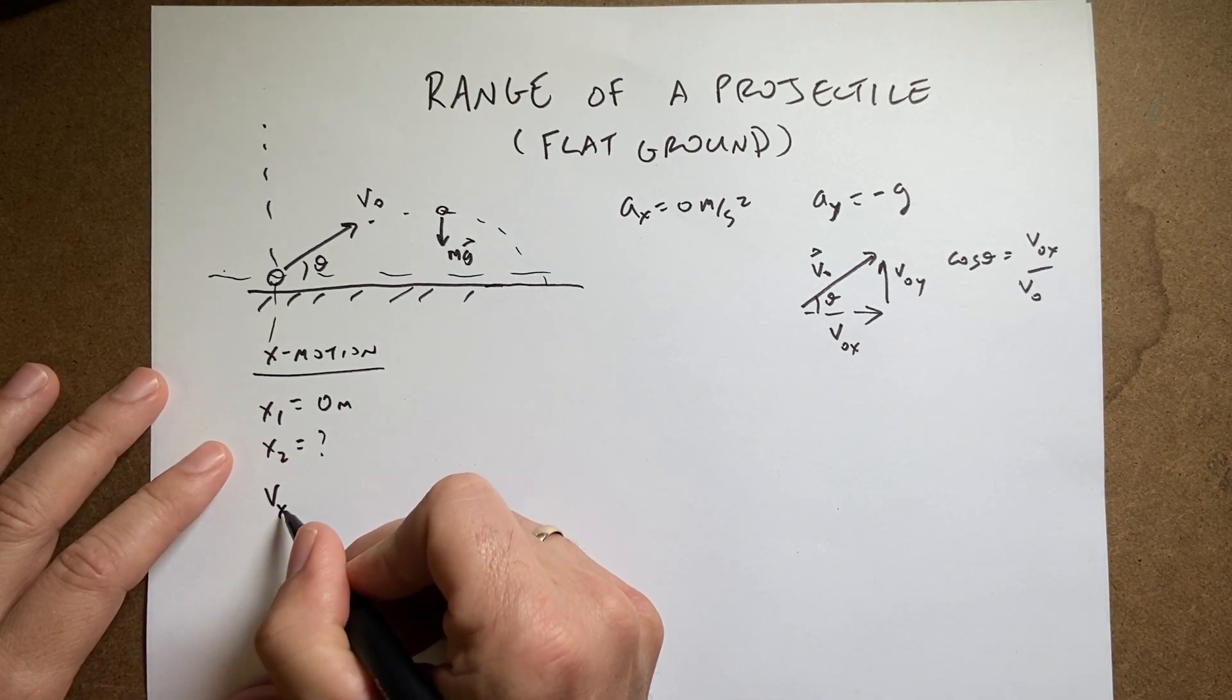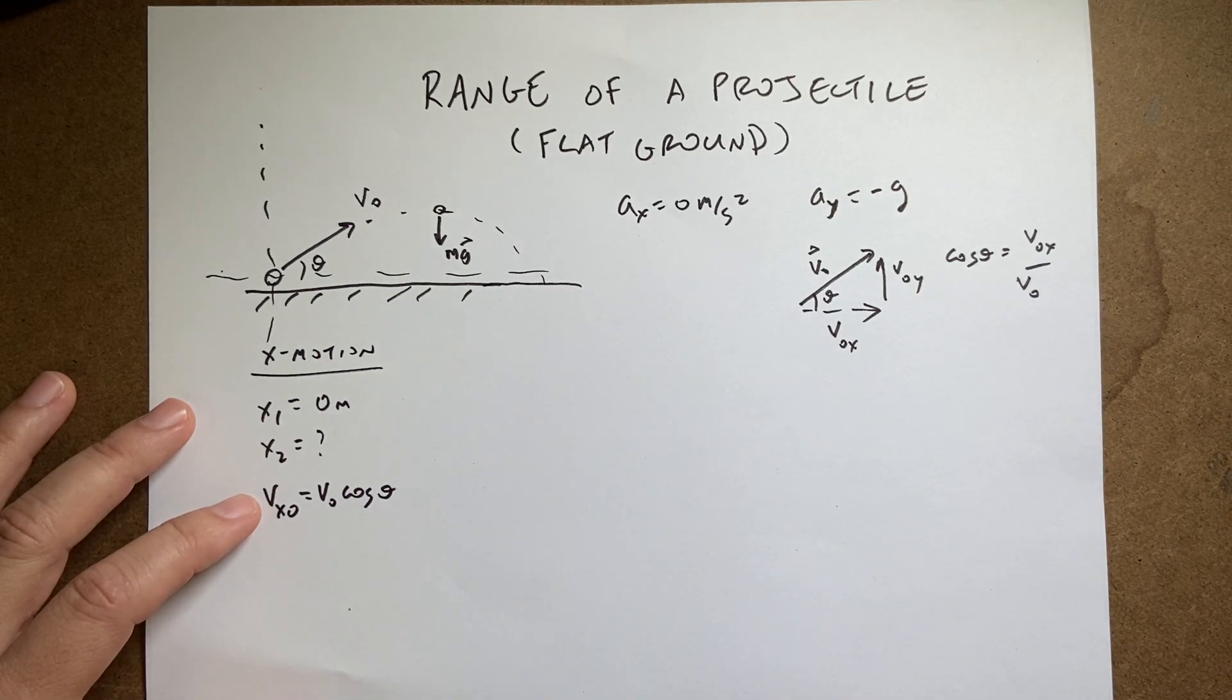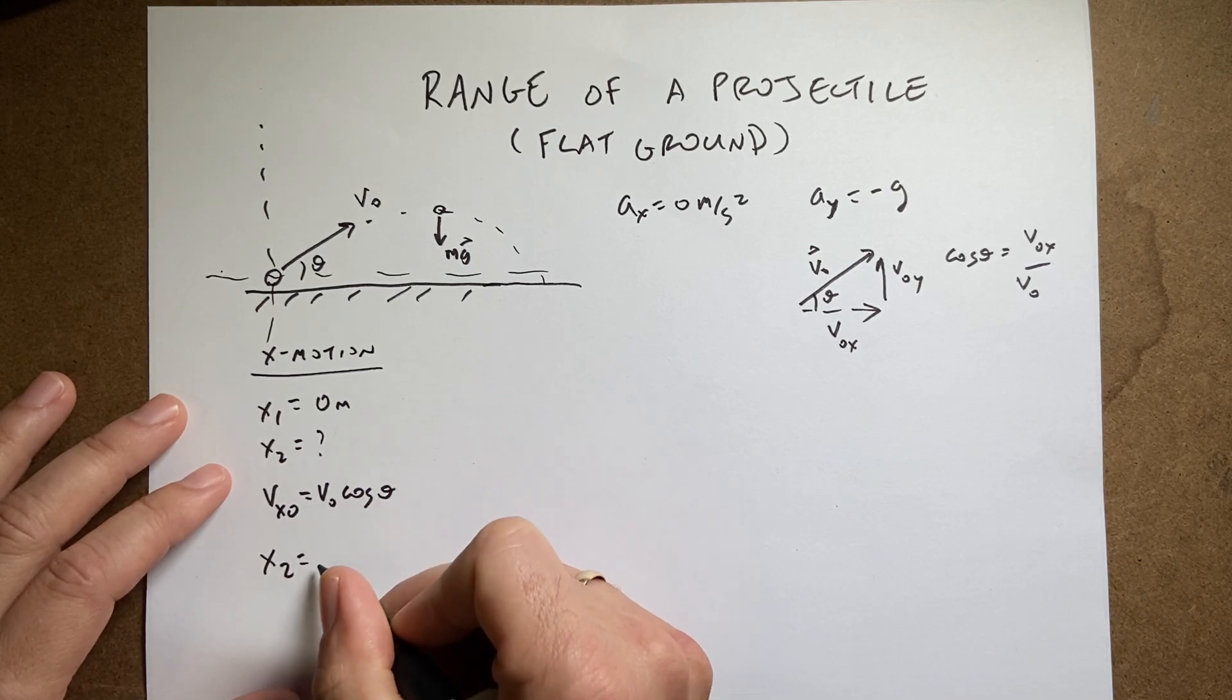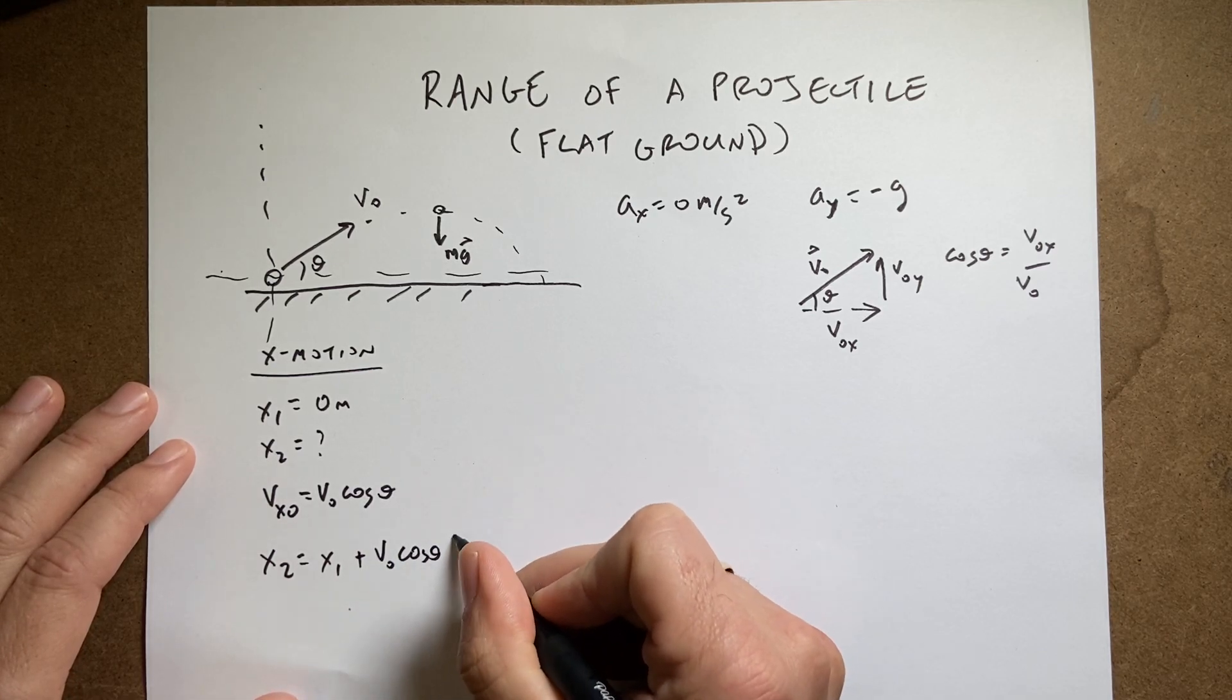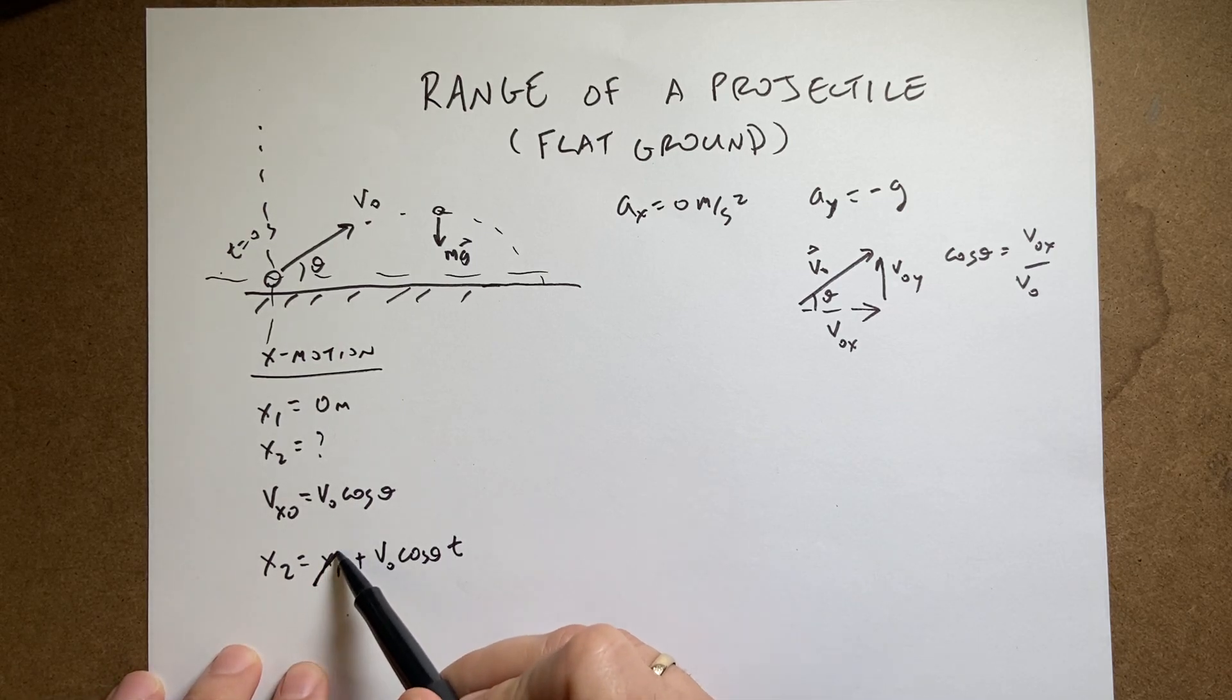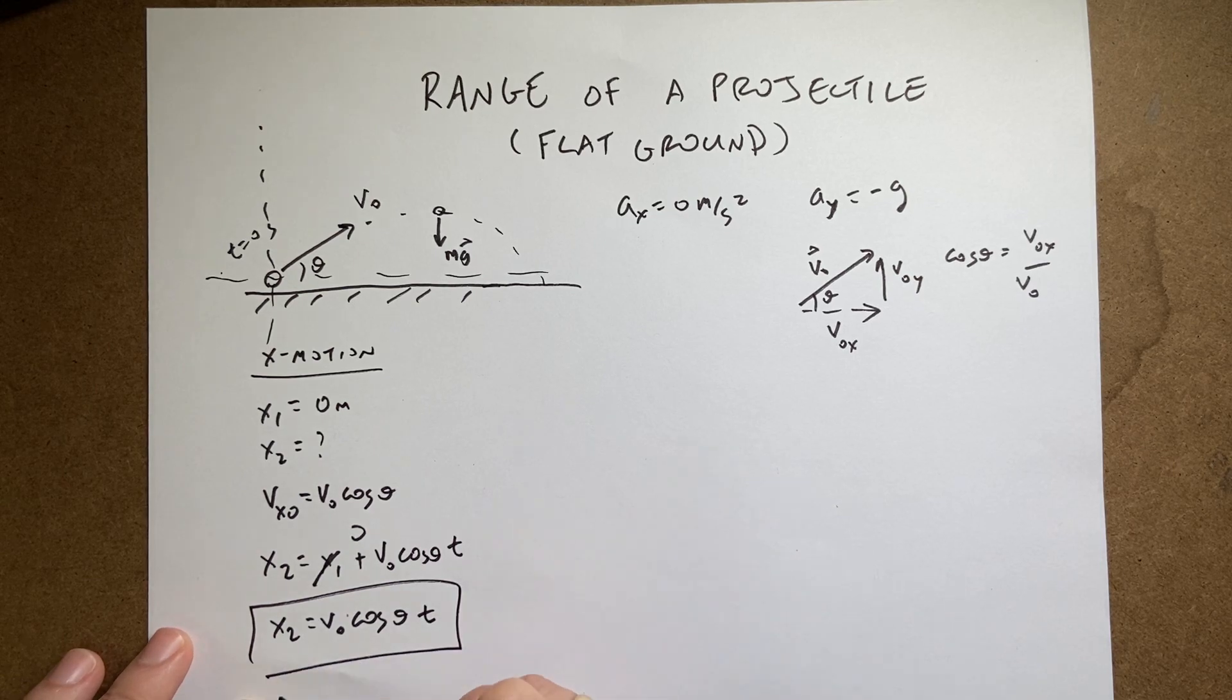So vx0, I should have put it that way better. It's not x0, that's better. But it's going to be v0 cosine theta. Now, using the definition of average velocity for a particle with zero acceleration, I get the final x position is the initial x position plus the velocity v0 cosine theta times time. Times a change in time, but I'm assuming I'm starting at t equals zero. So there we go. And then if I say x1 is zero, I get x2 equals v0 cosine theta t. And that's my range. But I don't know time.